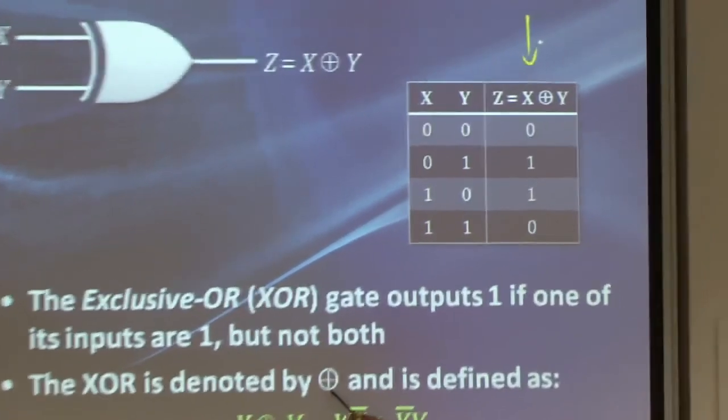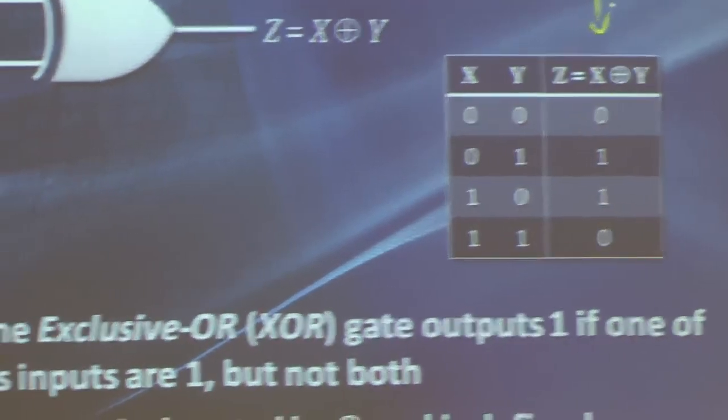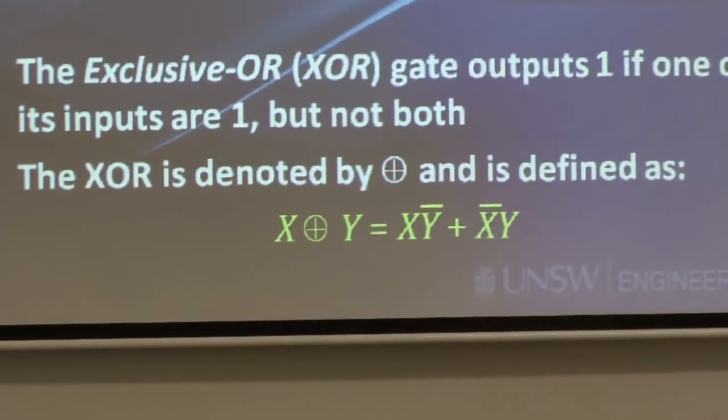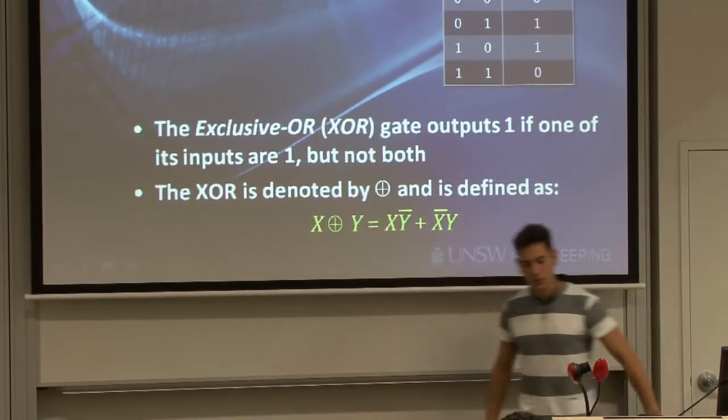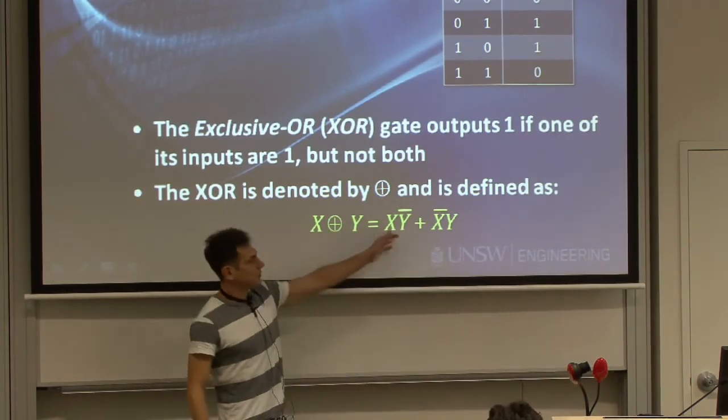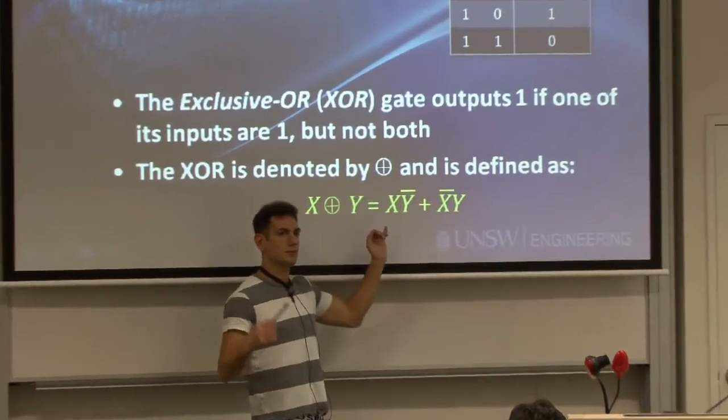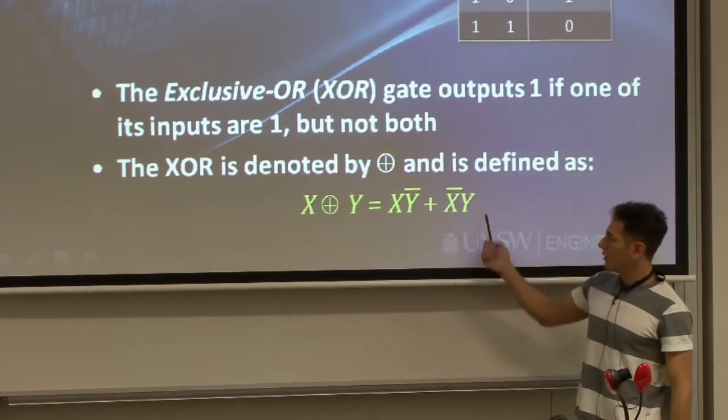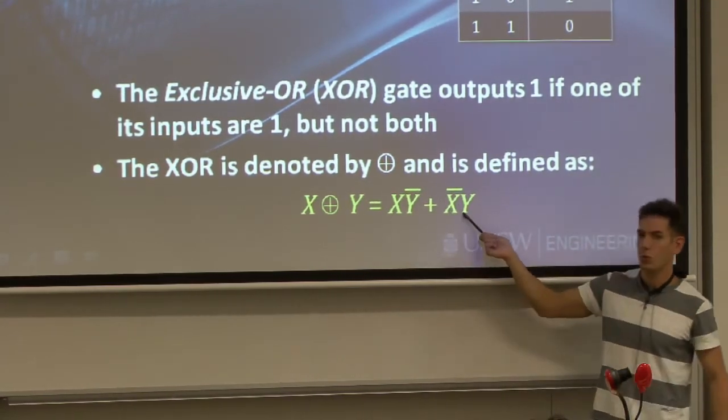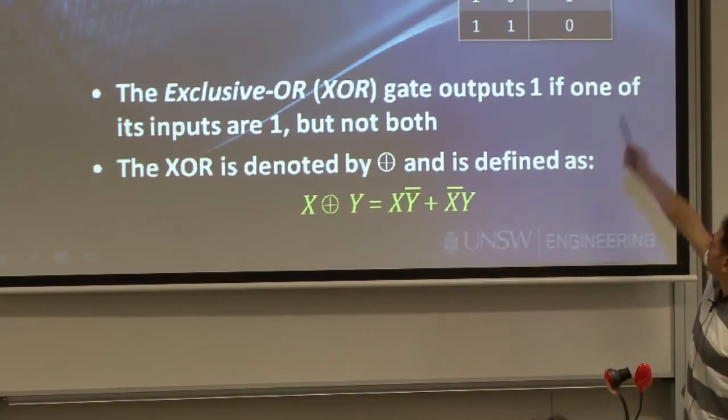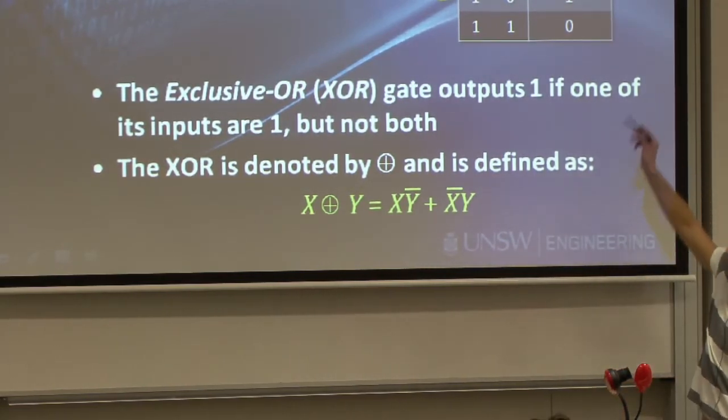The notation we have for an exclusive OR is something that looks like an OR with a circle around it. And by definition, and this is how we define an exclusive OR, is this expression here: X̄Y + XȲ. Now if you look at this expression for a bit, you can see that it implies that this will be true either when X is 1, Y is 0, or when X is 0, Y is 1, and not at any other time, which agrees with those two combinations, but it zeroes out for the other combinations.